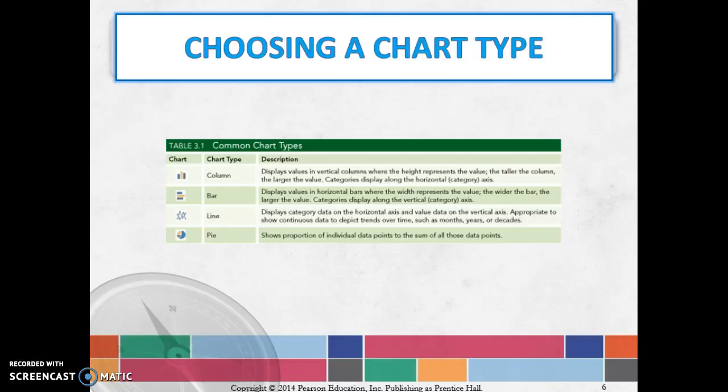And then a bar chart is similar to a column except for in this case it's bars. So they go left to right instead of up and down. So again the wider the bar the longer the bar the larger the value.